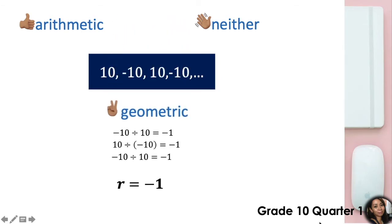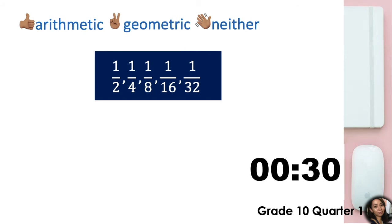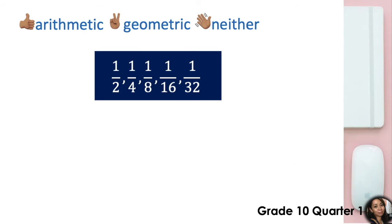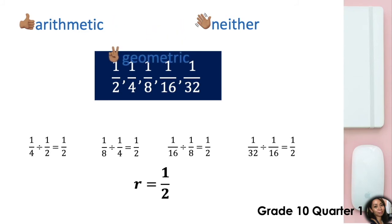What about the sequence 1 half, 1 fourth, 1 eighth, 1 sixteenth, and 1 thirty-second? Let's try dividing the numbers. There is a common ratio which is equal to one-half. Therefore, it is also a geometric sequence.